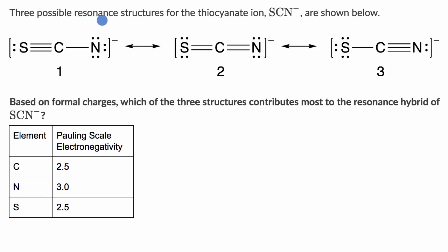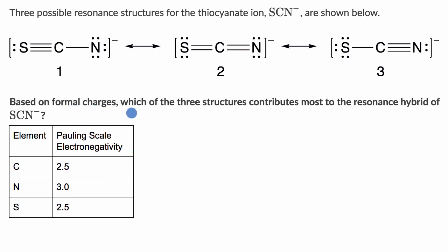We're told that three possible resonance structures for the thiocyanate ion are shown below. Based on formal charges, which of the three structures contributes most to the resonance hybrid of thiocyanate? They've given us the various elements in these resonance structures and their Pauling scale electronegativity, which may be useful for thinking about which structure contributes most to the resonance hybrid.